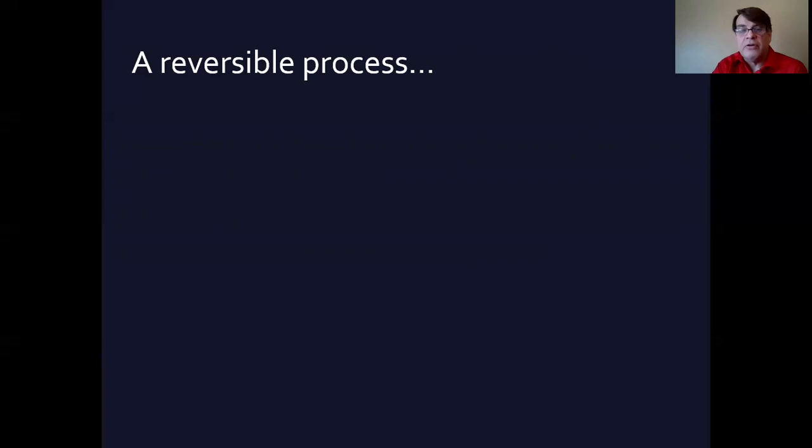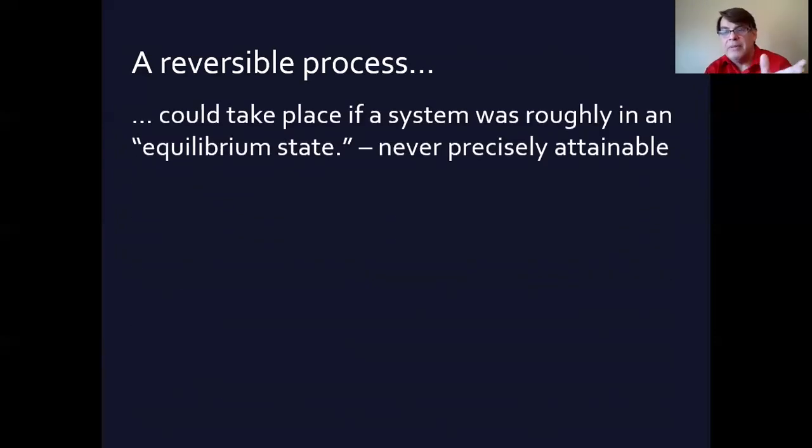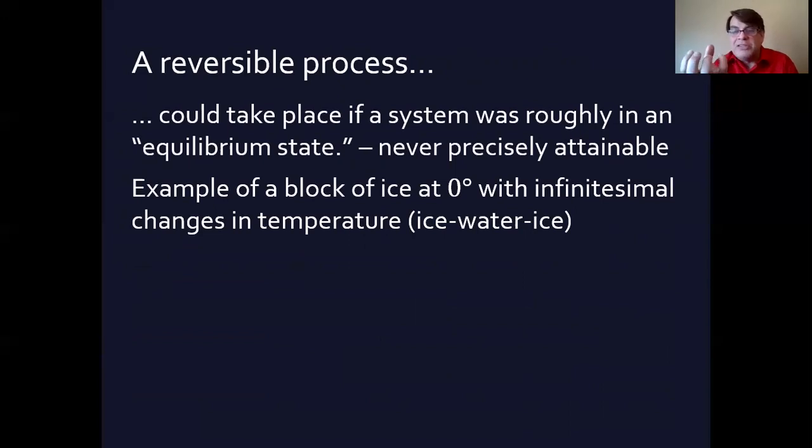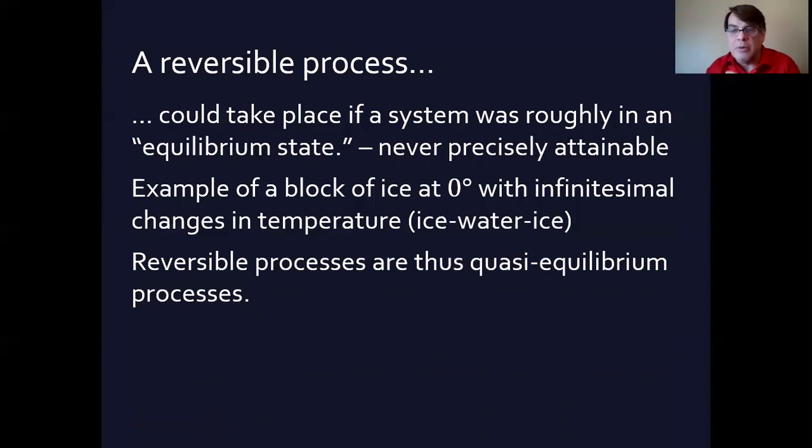Now, we can talk of reversible processes if you have a system that is very close to, but not entirely, in an equilibrium state, in a quasi-equilibrium state. For example, let's say you had a block of ice at zero degrees in an insulated chamber that maybe was undergoing little infinitesimal changes. Then you might have a little bit of back and forth between ice and water in a kind of quasi-equilibrium process. That's where reversible processes might happen in a quasi-equilibrium state, but if it were in a perfect equilibrium state, it wouldn't happen.